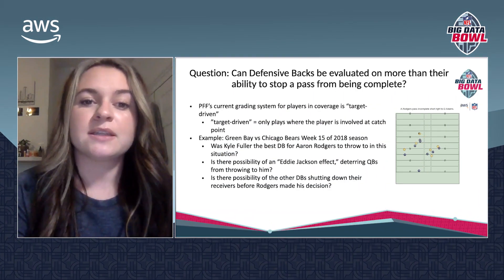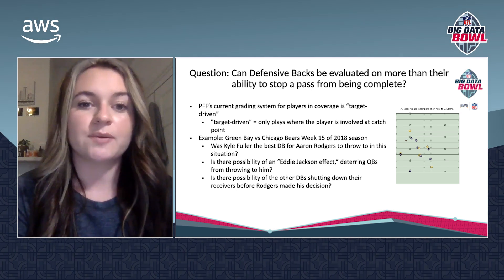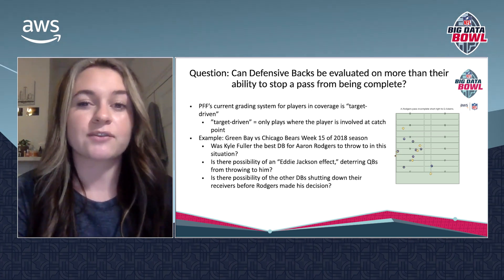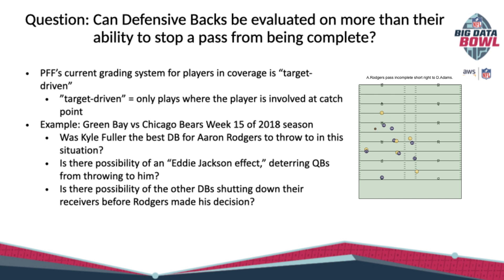The question I'm aiming to answer is: can defensive backs be evaluated on more than their ability to stop a pass from being complete? PFF currently grades players in coverage only when they're targeted, also known as a target-driven grading system. The problem with this is that it excludes players who aren't directly involved with the play.